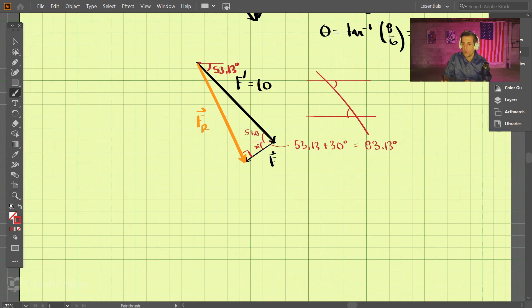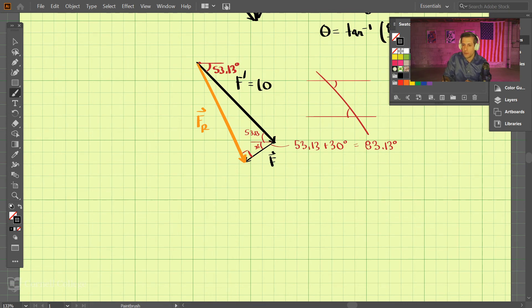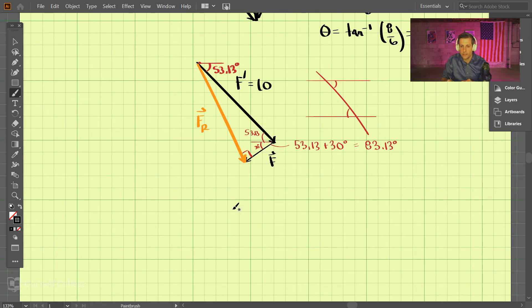So how do we solve the rest of this problem? Well, if we know that this angle is 83.13 degrees, we could use cosine and sine here. So the cosine of 83.13 degrees—that is adjacent over hypotenuse—this is a right angle here. We've already determined that adjacent is the magnitude of F divided by the hypotenuse, which we found out is 10.